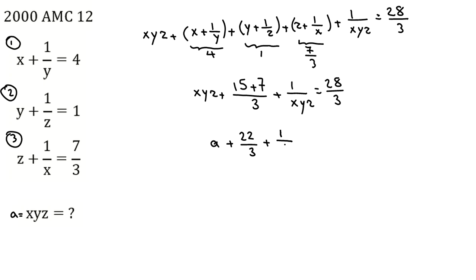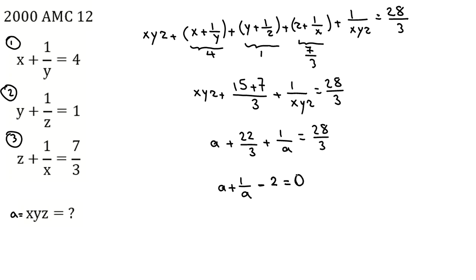Let a equal xyz. The equation becomes a plus 22/3 plus 1/a equals 28/3. Taking all terms to one side: a plus 1/a plus 22/3 minus 28/3 equals 0, which simplifies to a plus 1/a minus 2 equals 0.